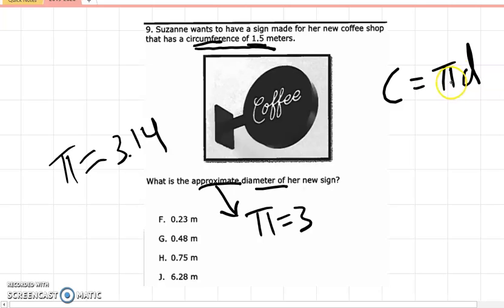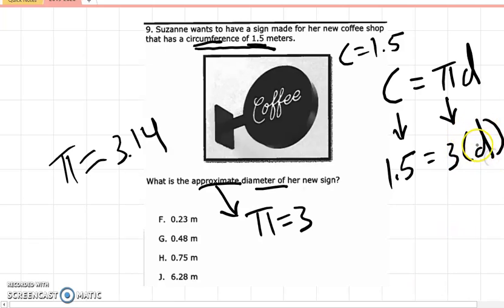Well, if you want the circumference, you do pi times diameter. Well, it's giving you the circumference. It's telling you it's 1.5. So the circumference is equal to 1.5. And do we know what pi is? Yes, we do. We said approximately, mas o menos, we're going to use 3. So then what it's saying is, 3 times what gives you 1.5? 3 times what? Well, 3 times 0.5 will give you 1.5. You can either multiply or divide.